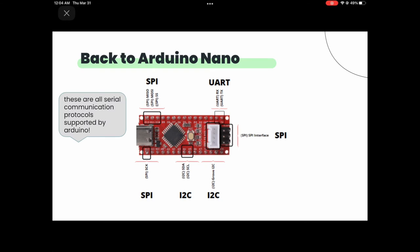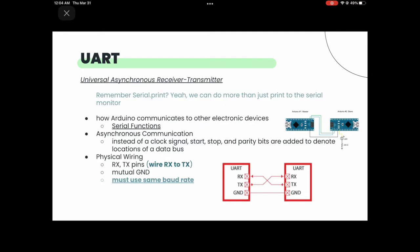Back to the Arduino Nano — the Arduino Nano supports three different types of serial communication: SPI, UART, and I2C. We'll be breaking down all three so you can implement them in your capstone project and the new project that Preston developed.